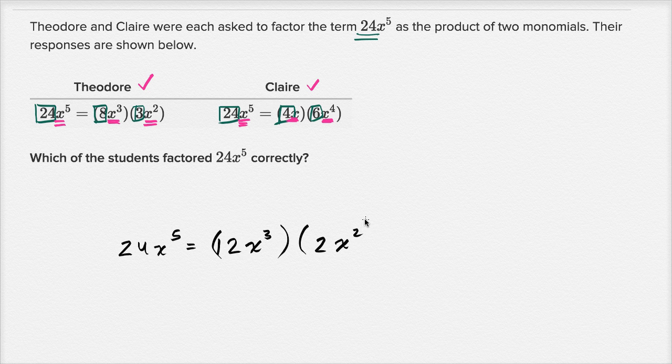So 2x squared. That's another possible factorization. So clearly there's just more than one way to factor this monomial into two other monomials.